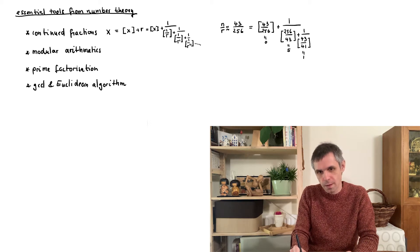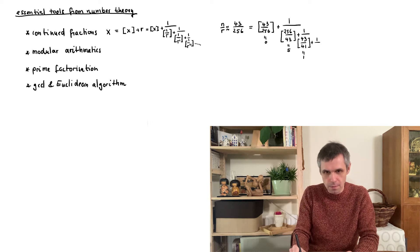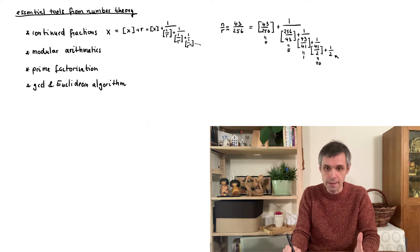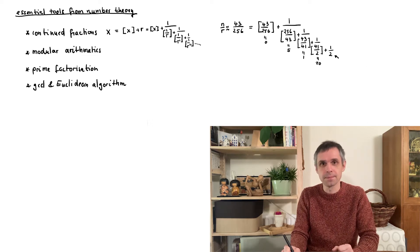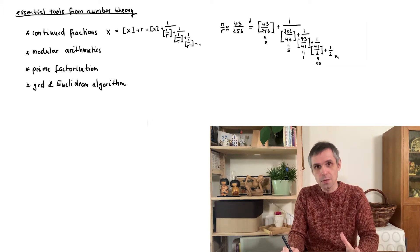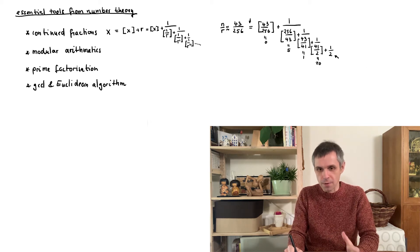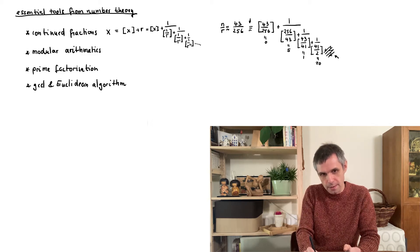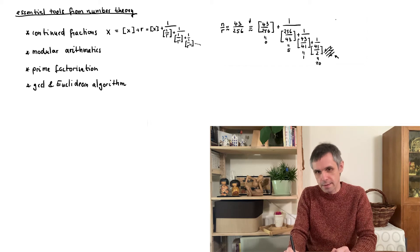Now the integer part is just one, so we continue with the remainder 2/41 placed into the denominator. Next we have 20, and then just one-half, which is already an integer itself. So we take its integer part and nothing remains, and therefore we stop. This always happens for rational numbers — at some point it terminates, giving an exact expression.